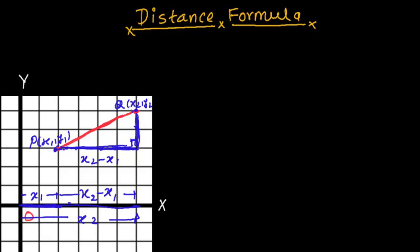Now, what about the other side? Y1 represents the distance from the X-axis up to here — from the X-axis to this level, so this is Y1. And Y2 represents the distance from the X-axis up to here — this whole distance is Y2. So what is the distance of only this portion? This whole minus this, and this is also Y1. So it will be Y2 minus Y1.